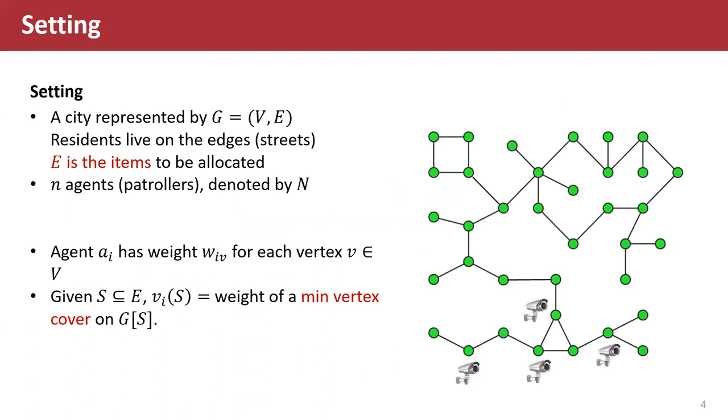Now, we transform the problem into a mathematical model. The city is represented by graph G = (V, E). Residents live on the edges, so V is the vertices, E is the edges.